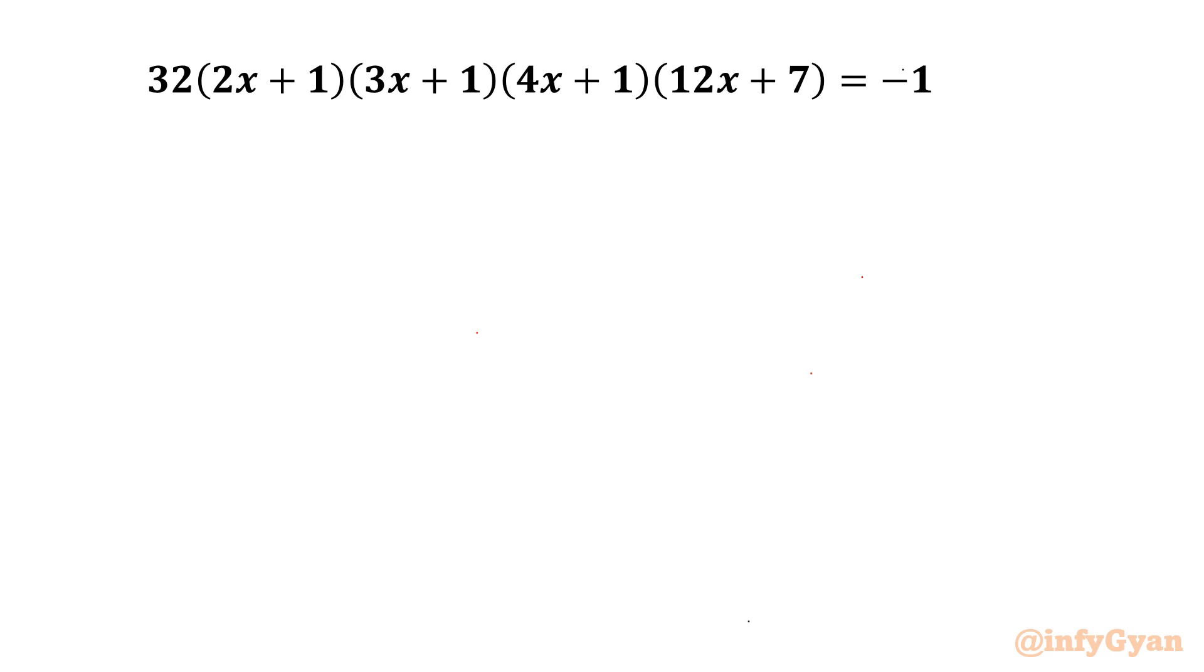Welcome back to Infigyan, my dear friends. Today in this video, we are going to take up one very interesting and challenging quartic equation. The equation is 32 times (2x + 1) times (3x + 1) times (4x + 1) times (12x + 7) equal to negative 1.